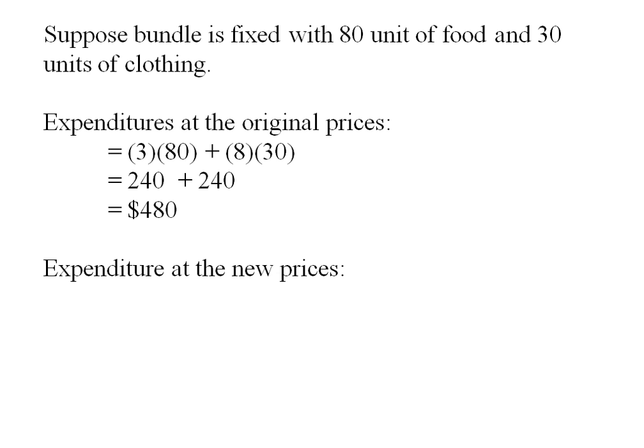The expenditure at the new prices would be the 6 times the 80 plus the 9 times the 30, or 750. So the resulting CPI would be 750 over 480, giving us 1.56, saying the cost of living went up by 56 percent.